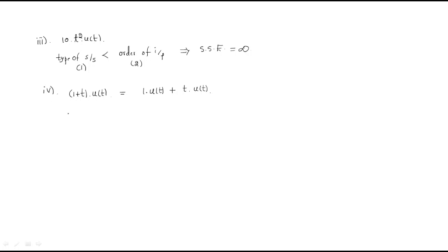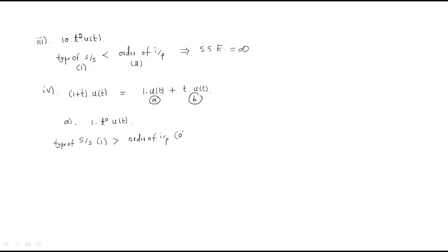For part A, the input is 1·t⁰·u(t) with order 0. The system type (1) is greater than the order of input (0), so for this part the steady-state error is 0.